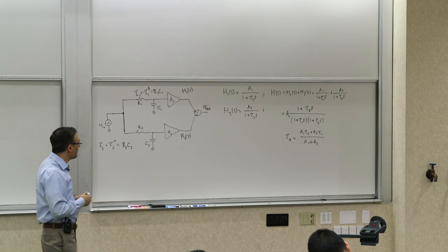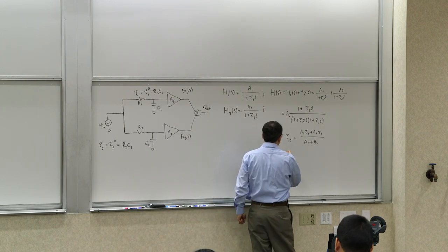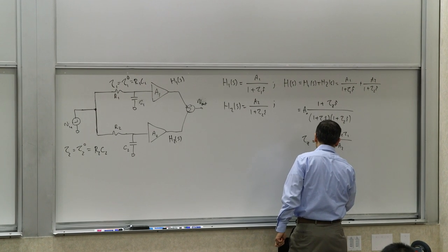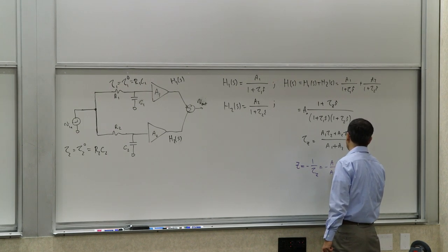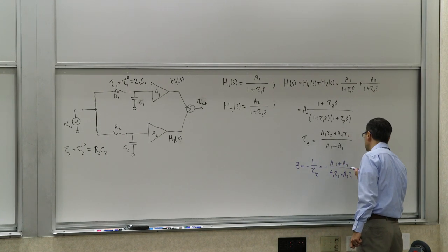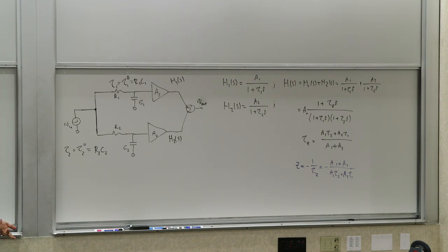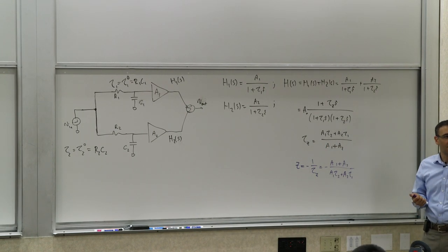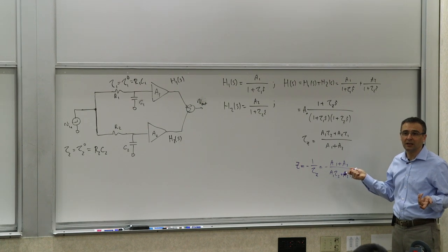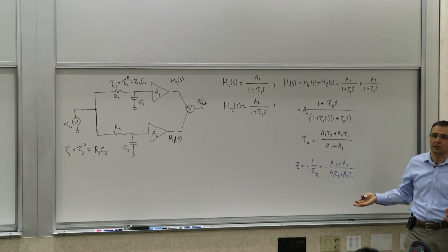If you want to calculate the zero frequency, the zero occurs at the root of the numerator, so z = −(A1 + A2) / (A1·tau2 + A2·tau1). Is it a left half plane or right half plane zero? You can't tell by just looking — it depends on the relative sizes of A1, A2 compared to tau1 and tau2.